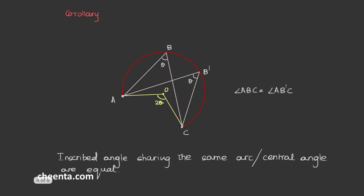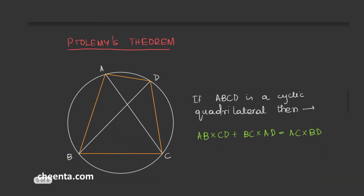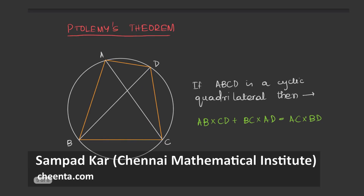Now that we are done with this, let's proceed to the start of the show — that is Ptolemy's theorem. Ptolemy's theorem basically says that the sum of the product of opposite sides of a cyclic quadrilateral is equal to the product of its diagonals.